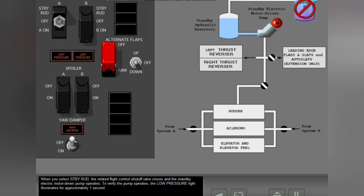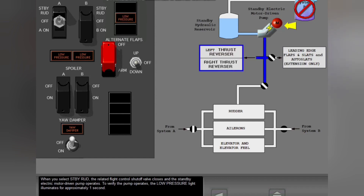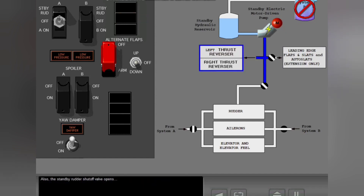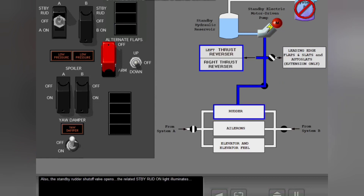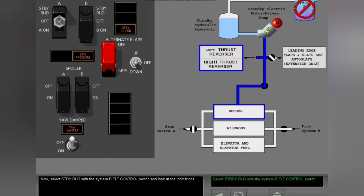To verify the pump operates, the low pressure light illuminates for approximately one second. The standby rudder shutoff valve opens, the related standby rudder on light illuminates, and the related low pressure light extinguishes. Select standby rudder with the System B flight control switch and look at the indications. Close the guards for both flight control switches.